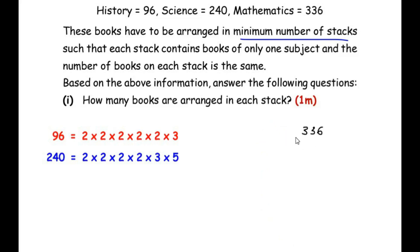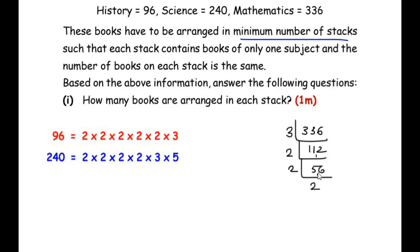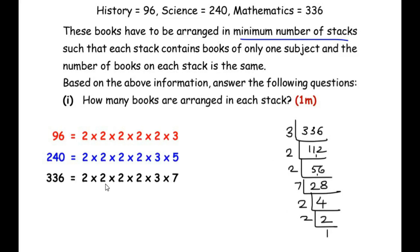Finally, let us prime factorize 336. Dividing 336 by 3 gives 112, then by 2 gives 56, then by 2 gives 28, then by 7 gives 4, then 4 = 2 × 2, and 2 × 1. So the prime factorization of 336 is 2 × 2 × 2 × 2 × 3 × 7, that is 2⁴ × 3 × 7.